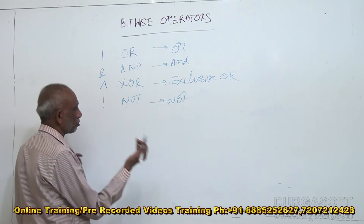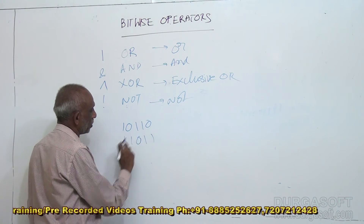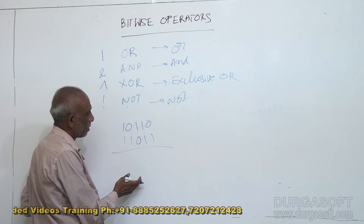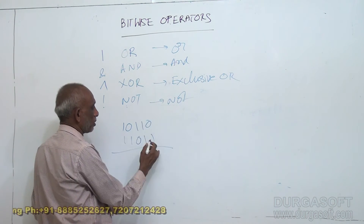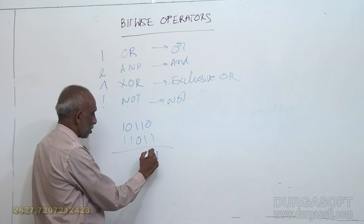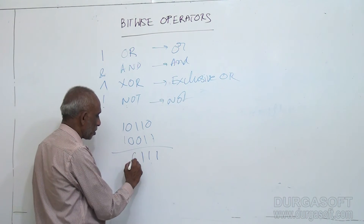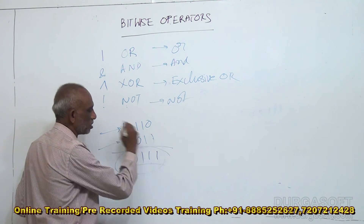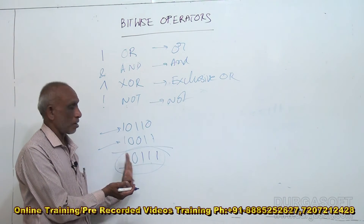Now let us take two binary numbers: 1 0 1 1 0 and 1 1 0 1 1. Let us do the OR operation. To OR these two numbers, take each bit, bit by bit. First bits: 0 OR 1 is 1. Both are 1s, result is 1. Next: 0 OR 1 is 1. Both are 0s, result is 0. Both are 1s, result is 1. So the result of OR-ing these two numbers is this number. This is how the OR operation is calculated on two binary numbers — each bit is OR'd bit by bit.